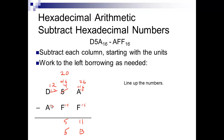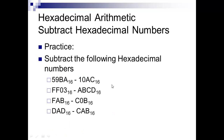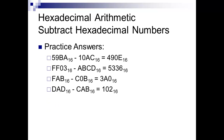Now 4 minus 15 — we can't do that, so we borrow again. 13 becomes 12, and we add 16 to the 4, giving us 20. 20 minus 15 is 5. Then 12 minus 10 is 2. So our answer is 25B base 16. In octal we borrowed 8s; this time we're borrowing 16s — just add it to the number and subtract. Pause the video, work through the practice problems, then check your answers. This is the last section for subtraction — go on to the next video when you're ready.